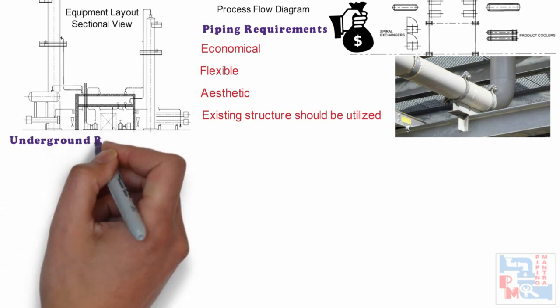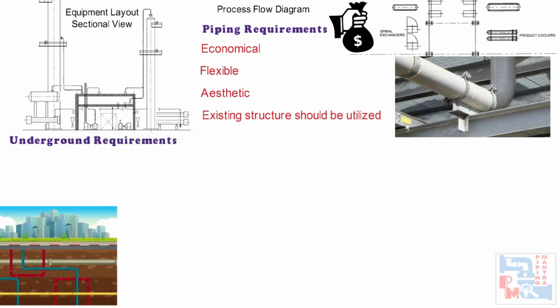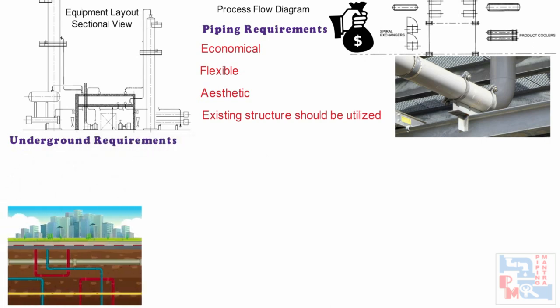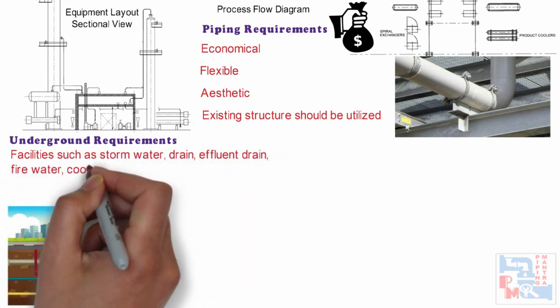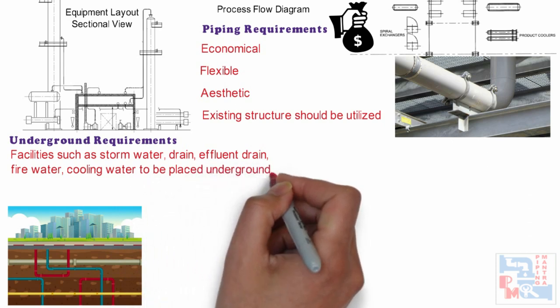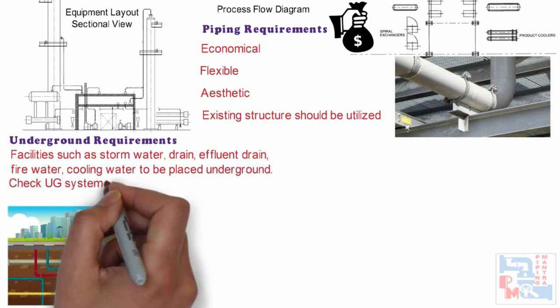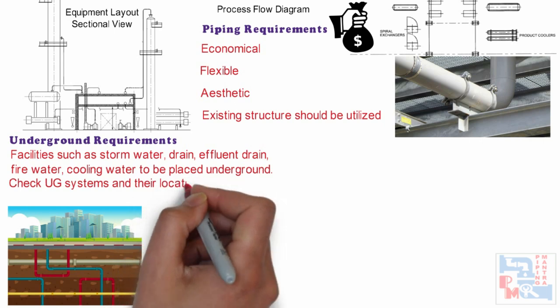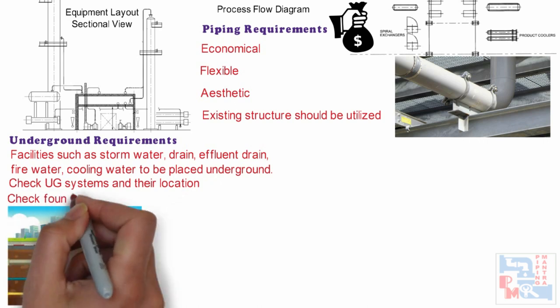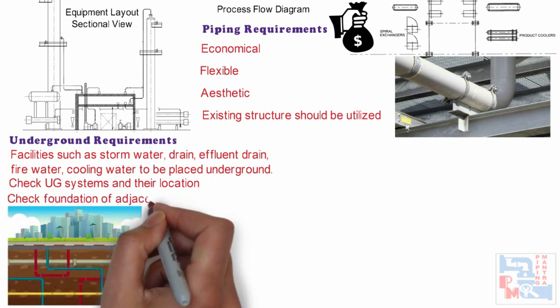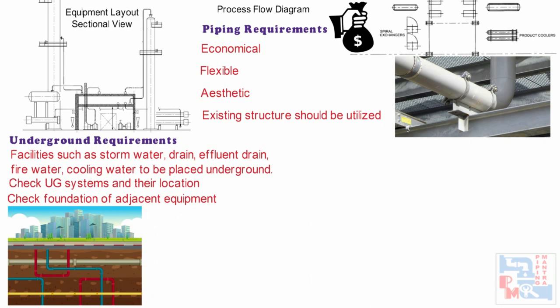There are some underground requirements as well. Before deciding the equipment location, facilities such as storm water drain, effluent drain, fire water, and cooling water to be placed underground must be checked — their location should be confirmed before proceeding with equipment location. Many times, equipment foundation piles may clash with the underground facilities, which must be avoided. The foundation footprint of two adjacent equipment is also to be checked so that they do not foul with each other.